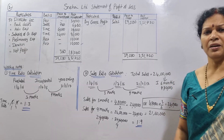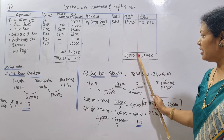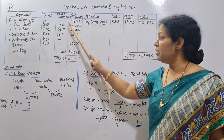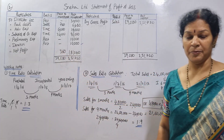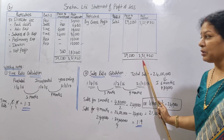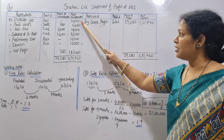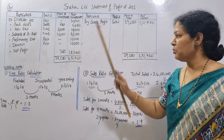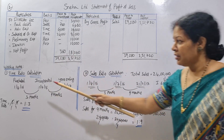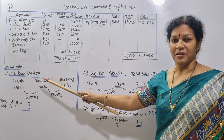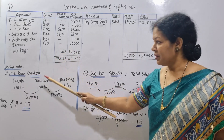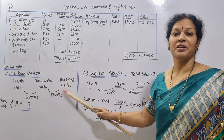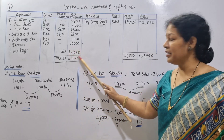After deducting all expenses, the pre-incorporation profit is: 39,080 minus 72,000, 6,000, and 32,000 — giving a net profit of approximately 3,60,000 (loss carried to capital reserve). The post-incorporation profit is: 3,51,720 minus all post-incorporation expenses including 18,000, 96,000, 10,000, and others — giving a net profit of 1,81,240.